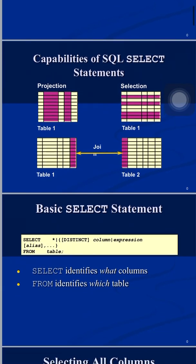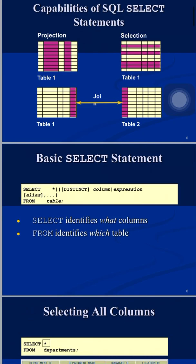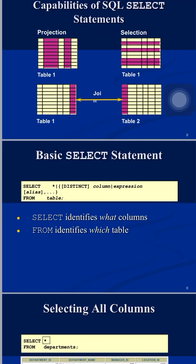Let us see the general syntax of the SELECT statement. The syntax is: SELECT [options] FROM [table]. SELECT and FROM are keywords. SELECT identifies which columns you want to retrieve from your table, and FROM identifies from which table you want to retrieve those values. Both these clauses are mandatory.